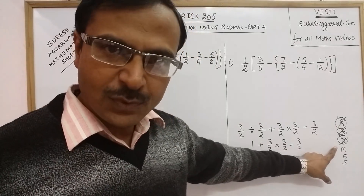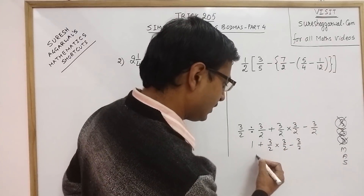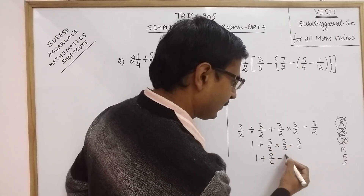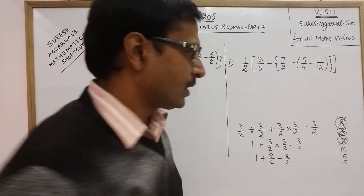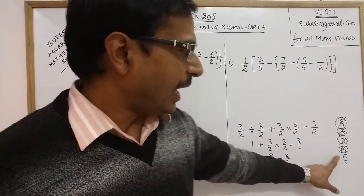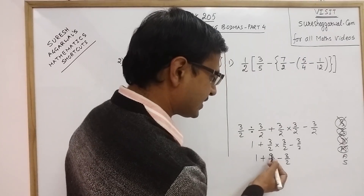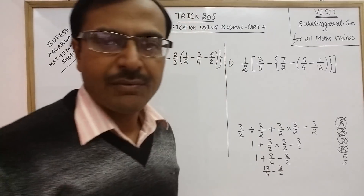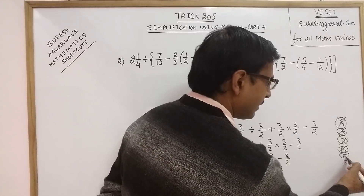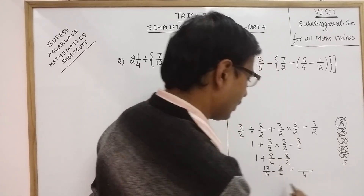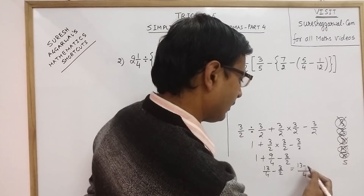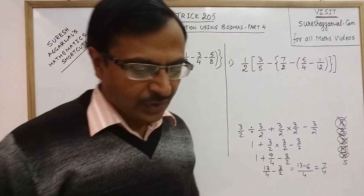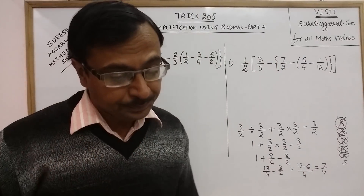Now come to M — M stands for Multiplication. We multiply the two terms to get 9/4, and 3/2 remains as it is. M is done. Now we perform Addition: 4 plus 9 is 13, giving 13/4. Finally, we perform the last step, Subtraction. Taking LCM as 4, we get 13 minus 6, that is 7/4, which is the final answer.